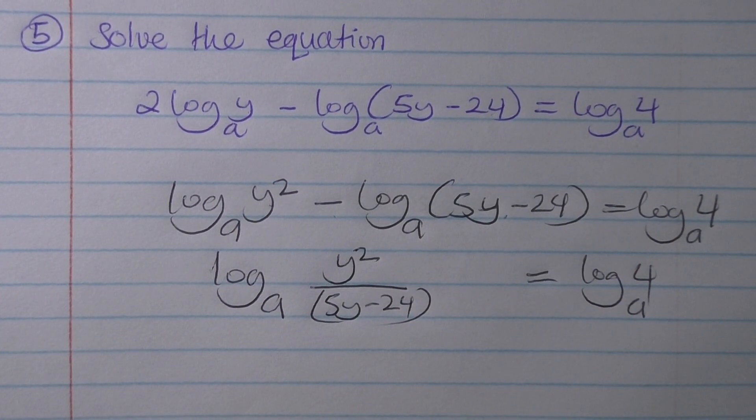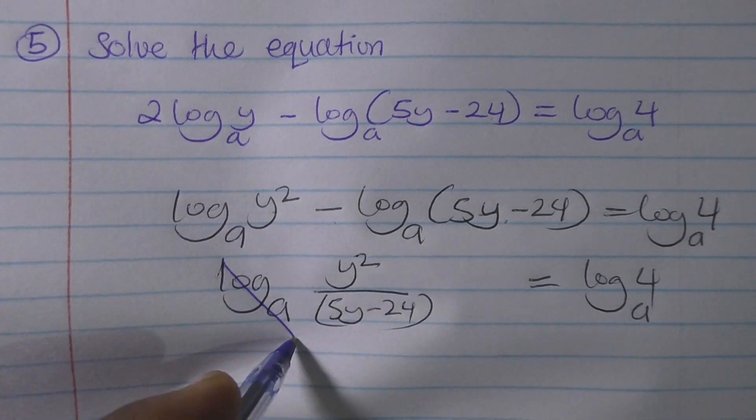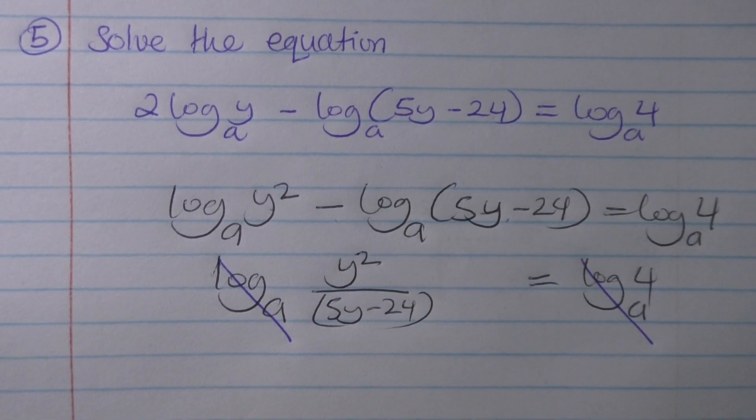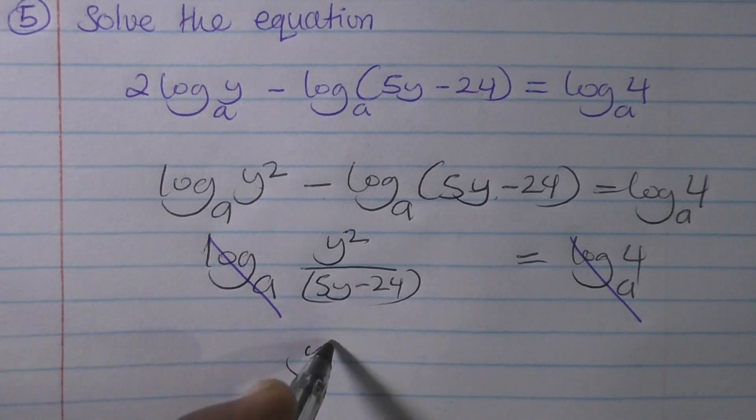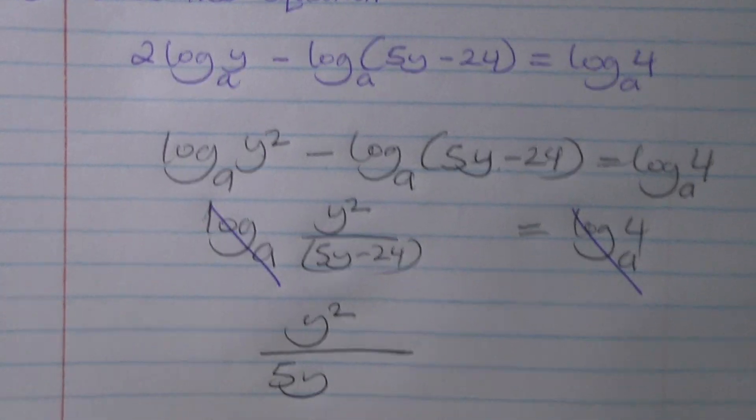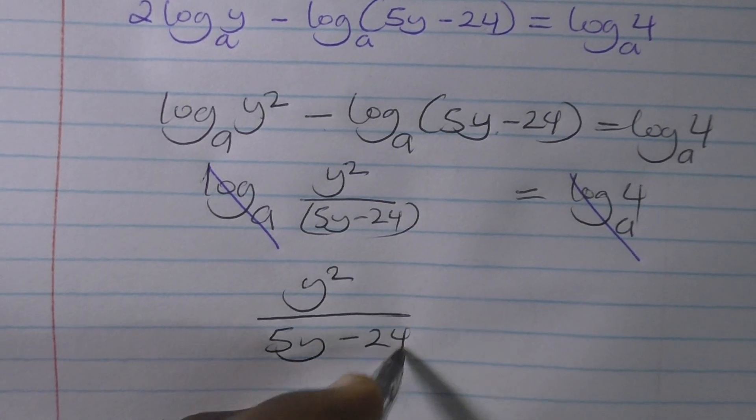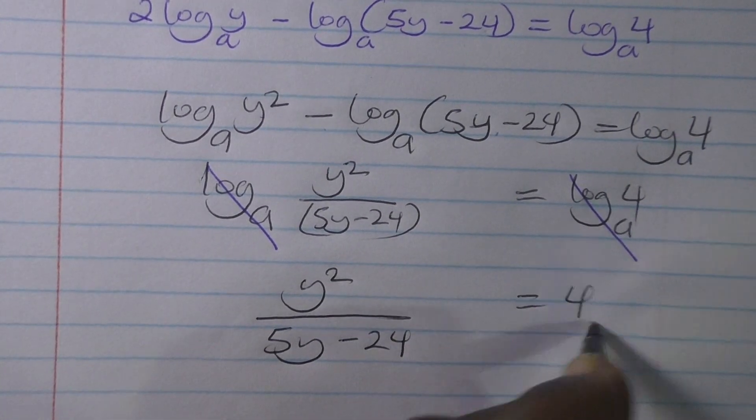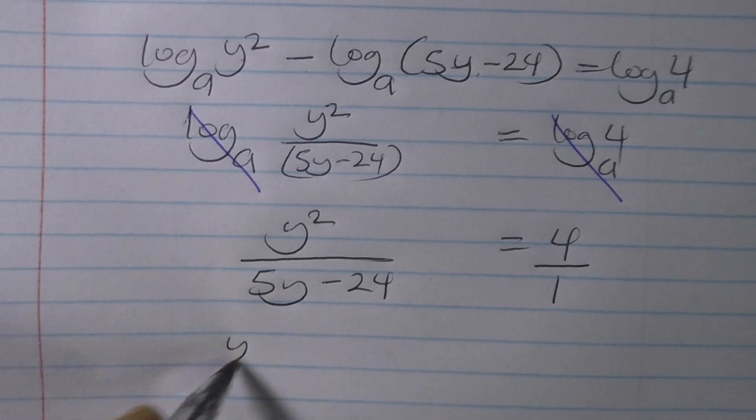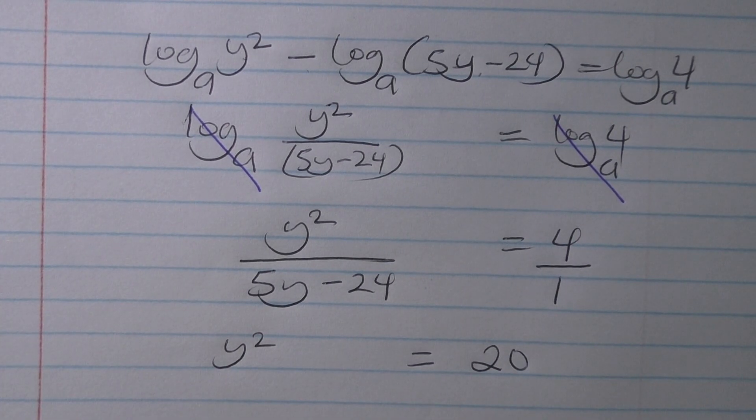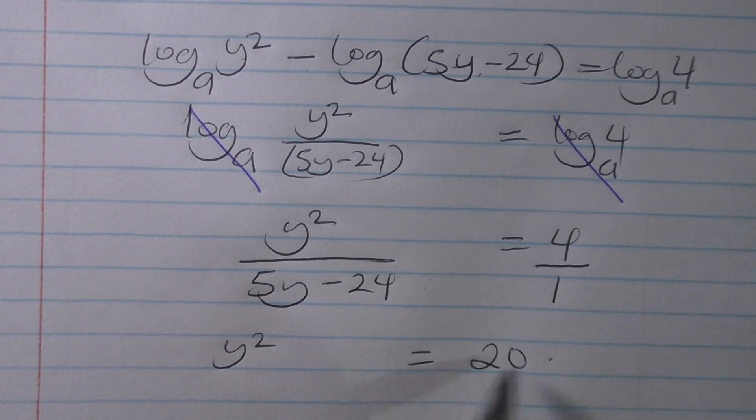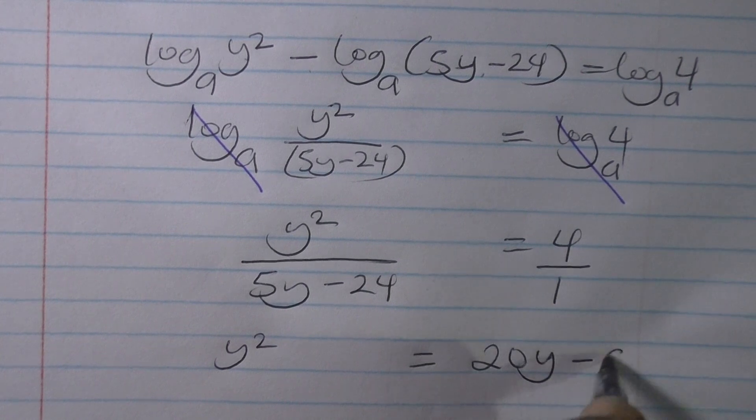The moment I get log log on both sides, I'm free to cancel them out and consider the powers. That is to say, I'll end up with y squared over 5y minus 24 equaling to 4. Cross multiply to get us y squared equaling to 20, because 5 times 4 is 20, and then 96. So this is 20y minus 96.